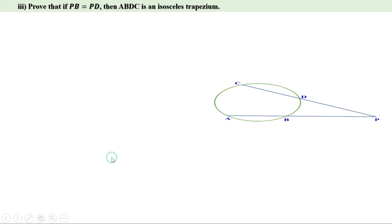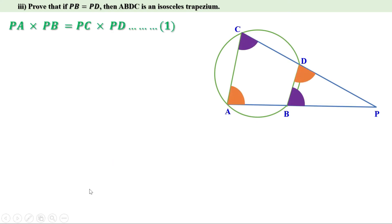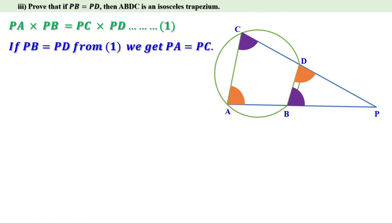Now, let us look at the third part of the question. We have to prove that if PB equal to PD, then ABDC is an isosceles trapezium. We have seen that PA into PB equal to PC into PD. Suppose PB equal to PD — we can cancel PB and PD from both sides. When you take PB on the other side, we get PA equal to PC into PD by PB. If PD and PB are equal, PD by PB equal to 1. Therefore, we get PA equal to PC. We can say PA equal to PC when PB equal to PD.